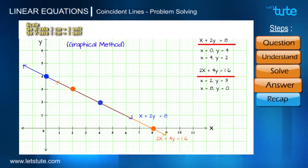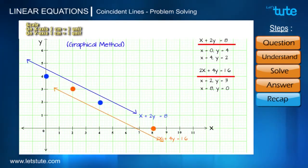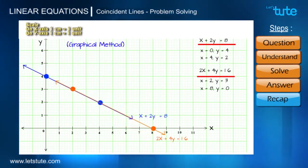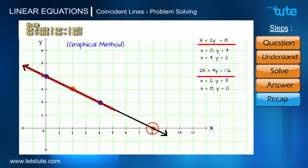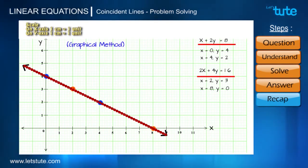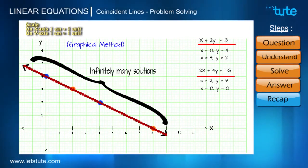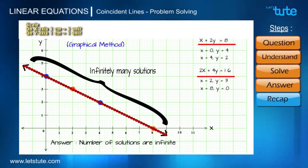Let us move to step four: finding the number of solutions. We had two equations, so we should have got two different lines, but these two lines are merged with each other to give a single line — the two straight lines are coinciding. Therefore, every point on this line is common to both equations and is a solution for both linear equations. Since a line can have infinitely many points, there are infinitely many solutions for these two linear equations.